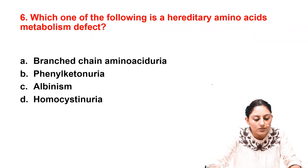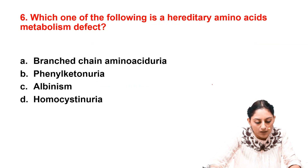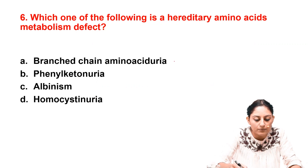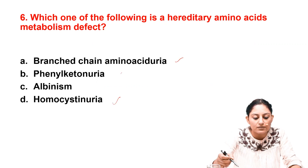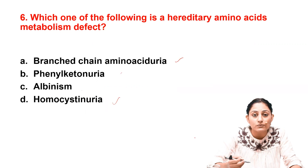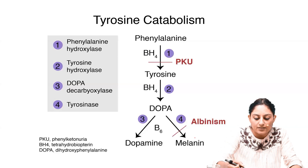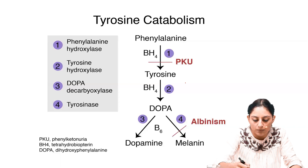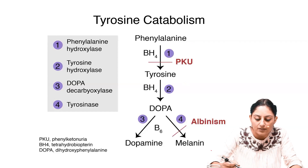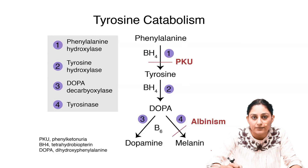The sixth question asks which is a hereditary amino acid metabolism defect. We have already discussed maple syrup urine disease, phenylketonuria, and homocystinuria — all are hereditary amino acid metabolism defects. Albinism comes under tyrosine catabolism: phenylalanine is converted to tyrosine, then to DOPA, which is converted to melanin by tyrosinase. If tyrosinase is absent, DOPA cannot be converted to melanin, and the patient develops albinism.